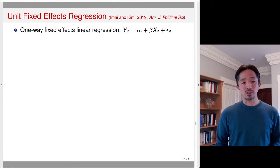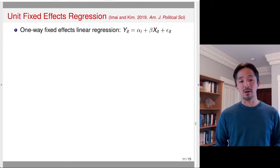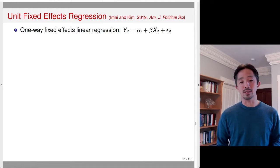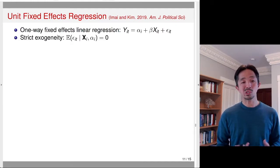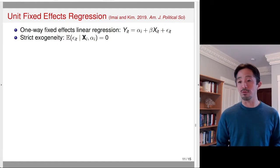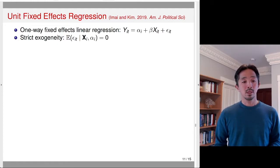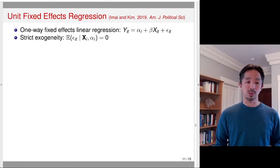Let's think about the unit fixed effects regression, which is the basic regression model. Here, y_it is the outcome, alpha_i is the unit fixed effect, and x_it is the treatment variable. This is called a one-way fixed effects linear regression — you have unit fixed effects, but it is not a two-way fixed effects regression model.